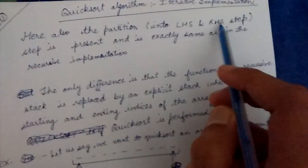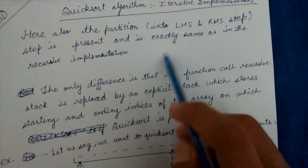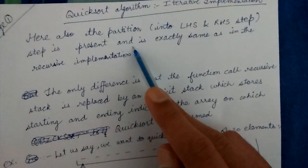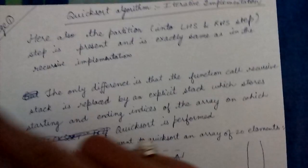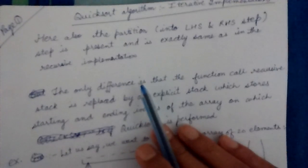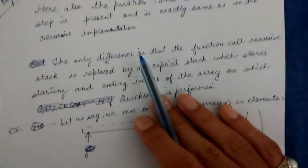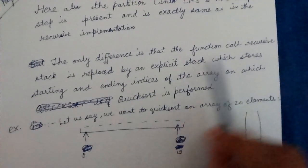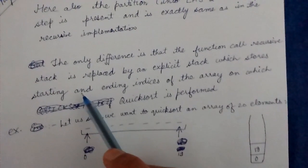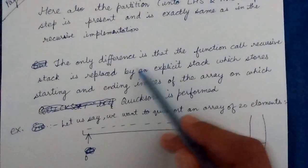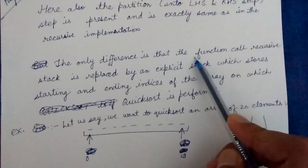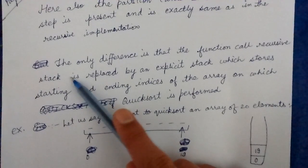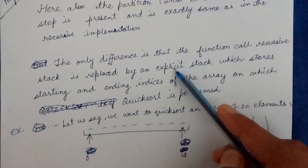Here also the partition into the LHS and RHS, placing the pivot element in between, is present and is exactly the same as in the previous video. The only difference here is that the function call recursive stack is replaced by an explicit stack.